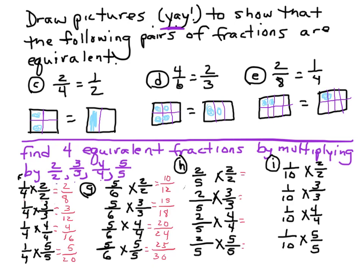Two times two is four, five times two is ten. Two times three is six, five times three is fifteen. Two times four is eight, five times four is twenty. Two times five is ten, five times five is twenty-five. And last of all, let's go ahead and multiply these: one times two is two, ten times two is twenty. One times three is three, ten times three is thirty. One times four is four, ten times four is forty. One times five is five, ten times five is fifty.